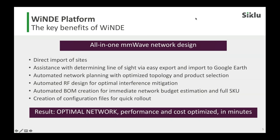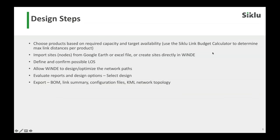Essentially the design steps are as follows. First, you want to choose the base on required capacity and distance availability, and you can use the Siklu link budget calculator. If you don't know what some of these things are, don't hesitate to ask questions. Then you can import nodes from Google Earth, an Excel file, or create sites directly into Windy — three ways to bring in information.